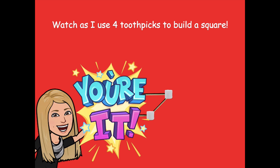I want you to pause the video. Take four toothpicks and whatever sticky material you have and stick them together to make a square. Just one hint: glue or a glue stick won't work for this activity because it won't dry fast enough. So use four toothpicks and your marshmallows or sticky material to build your square, then click play when you're ready for the next step.